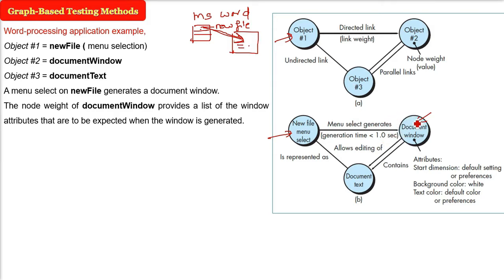And the document window, whenever you are working on it, you will write certain things. Because once you press a menu button, you will have a clean document window, you want some default setting, some white background, when you write, you want some font color like black. Default color or preferences, the background color. These are the attributes, these are the weight being given to node number 2.